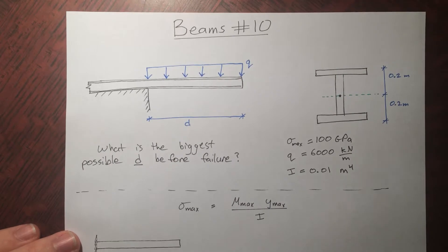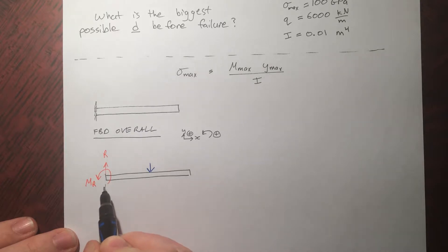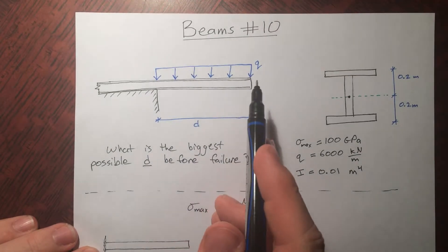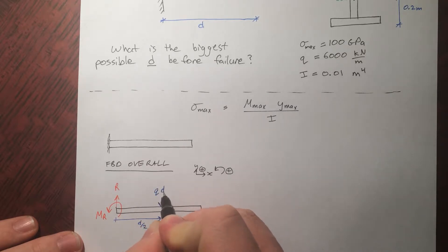So there you have it. I've collapsed this whole applied load into a single point load, right at the center of this distribution. So we can say it's a distance d by 2 away. And what's the magnitude? Well, force per length q, times total length d, so it's just going to be qd.